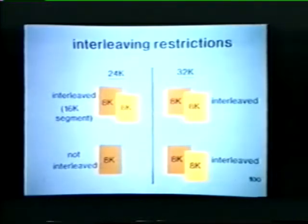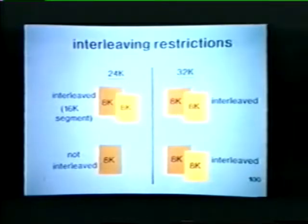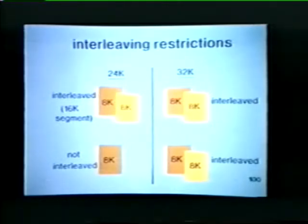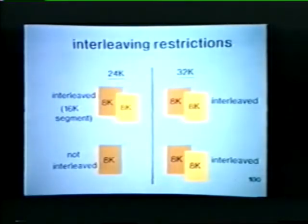There are a few restrictions to note when interleaving memory. For example, if we're working with 8K banks of memory, we can only interleave in consecutive 16K segments. Therefore, if our system has 24K of core memory, only the first 16K of memory can be interleaved — the remaining 8K cannot be interleaved. On the other hand, if our system has 32K of core memory, the first 16K segment can be interleaved and the second 16K segment can also be interleaved.